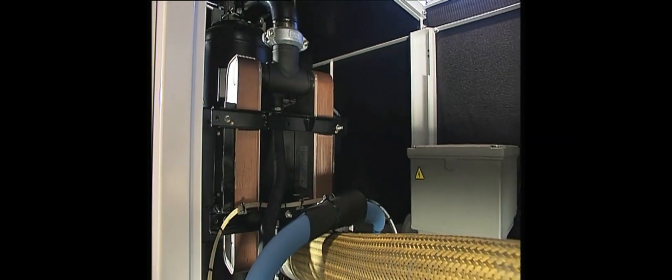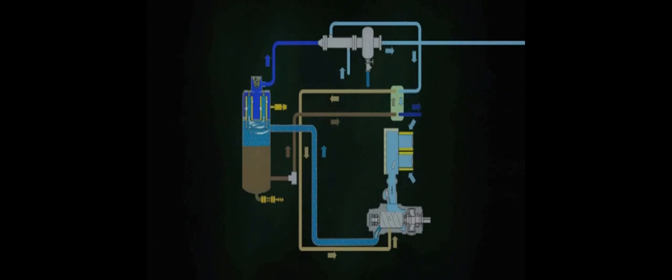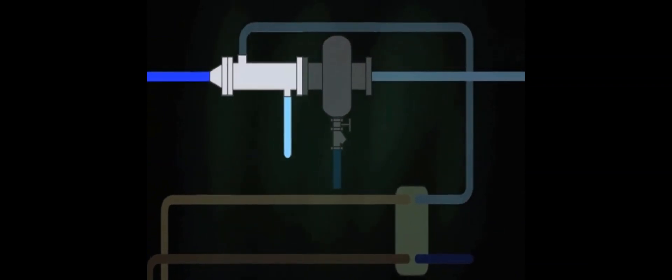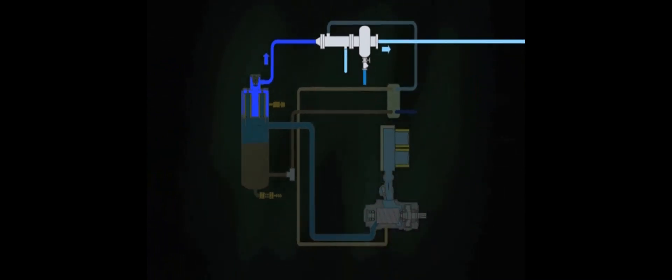Once oil and air have been separated, the air enters the final stage in the compressor unit. Saturated air with a temperature of plus 95 degrees Celsius enters the aftercooler and is cooled down before entering the condensate water separator. With a temperature of plus 8 degrees Celsius above the cooling water temperature, much of the condensate water is removed from the compressed airstream.